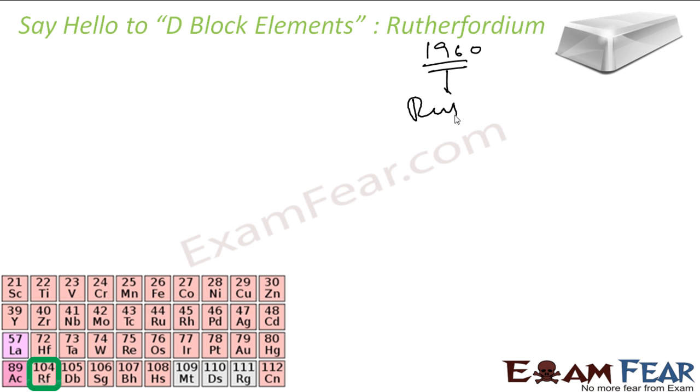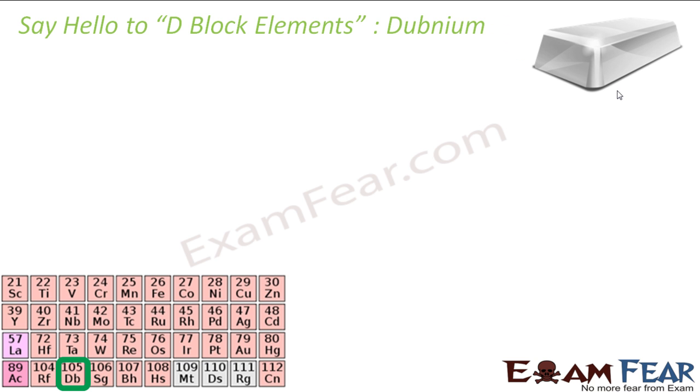Not much use, all radioactive. Dubnium is named after the city Dubna in Russia. It was discovered or produced, because all these elements are artificial. This is radioactive. It was produced in 1997, pretty recently.